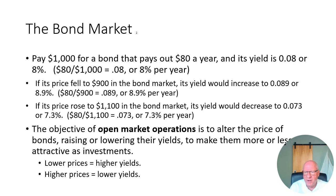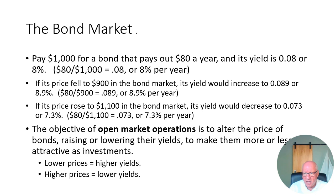What would happen if the price of that bond fell to $900? The new owner still receives the same $80 annual interest. Using our formula: $80 divided by $900 equals approximately 0.089, so the bond now yields eight point nine percent. That makes sense — if you paid less than $1,000 but still receive the full $80 of interest, your rate of return is higher than the person who paid the full thousand dollars.